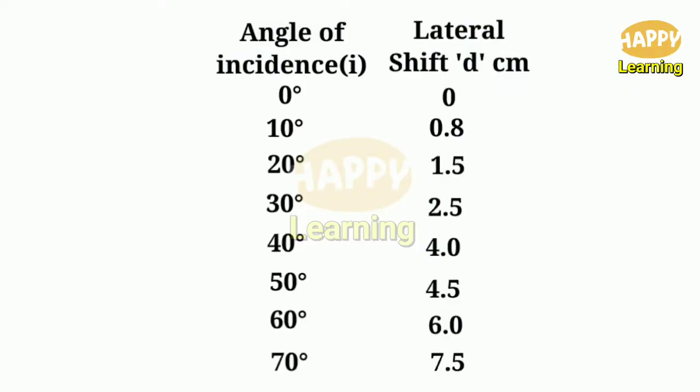For 60 degrees, the lateral shift is 6 centimeters. And for 70 degrees, the lateral shift is 7.5 centimeters.